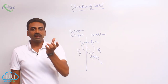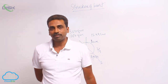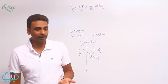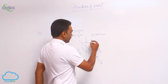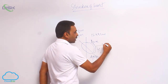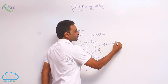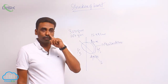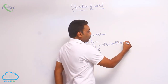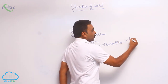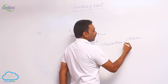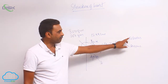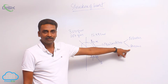If you see the external structure, externally the heart is covered by the pericardium — it is covered by a membrane called the pericardium. The pericardium itself is made up of double layers: one is the fibrous pericardium and the other is the serous pericardium.